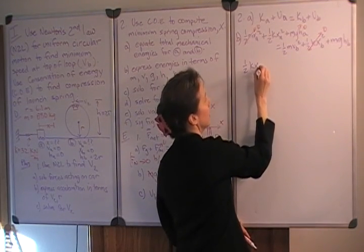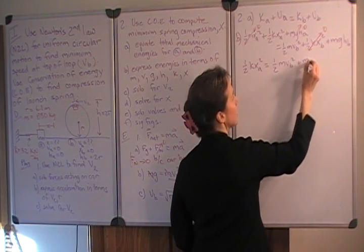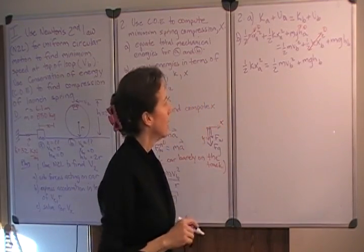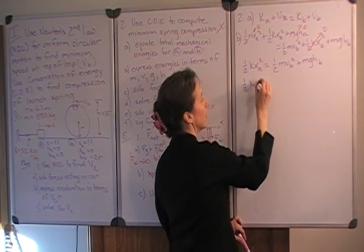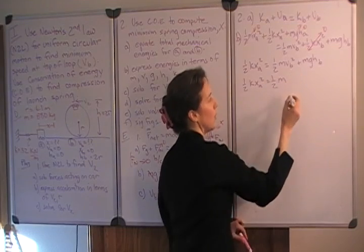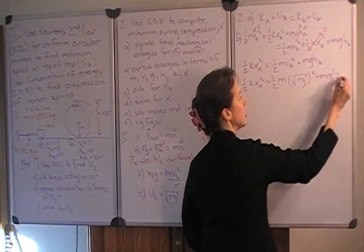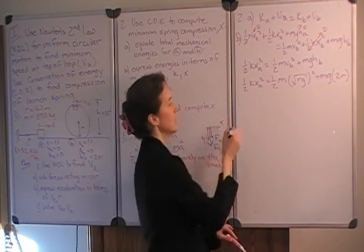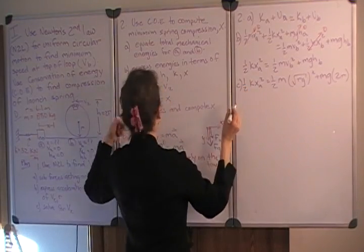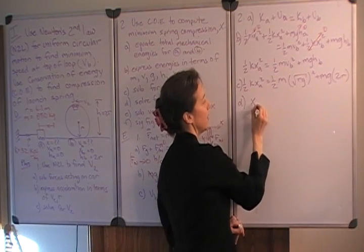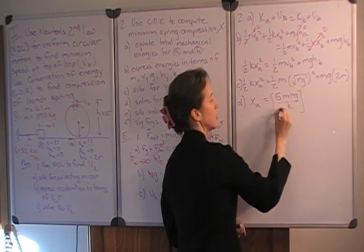One-half k times the initial compression of the spring is one-half the mass times the speed at B squared plus its gravitational potential energy. So, let's start simplifying this expression. Now, we'll substitute for the speed at B, the square root of Rg quantity squared plus mg times 2 times the radius. And simplifying that further, and then, so that here we substitute it, and then we'll solve for x, and I'll leave that algebra to you, but we find that the compression at A is the square root of 5mRg over the spring constant.